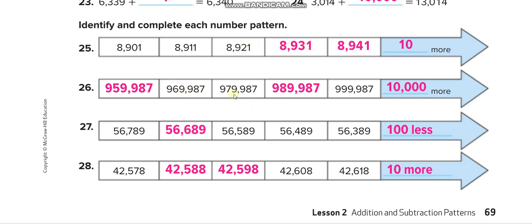These two are together, so you will see 959,987 and 969,987. So the difference is at 10,000, so 10,000 more. So before it was, because we are adding 10,000 more: 959,000, then 969, 979, 989, and 999.